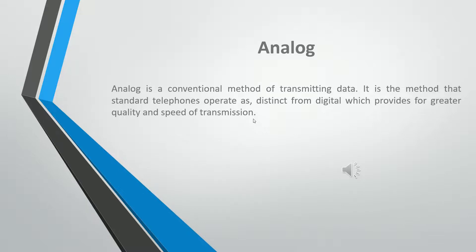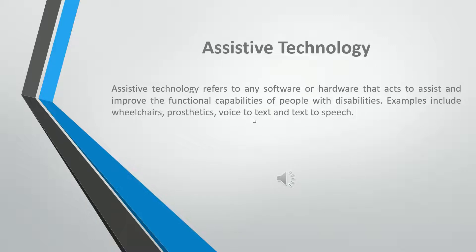Analog is a conventional method of transmitting data. It is the method that standard telephones operate on, distinct from digital which provides for greater quality and speed of transmission. Assistive technology refers to any software or hardware that acts to assist and improve the functional capabilities of people with disabilities.